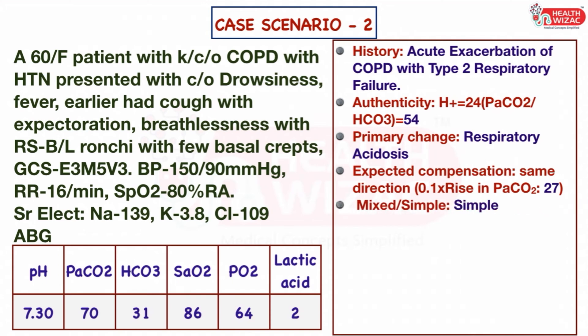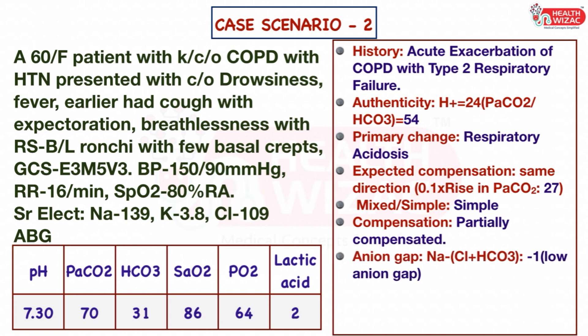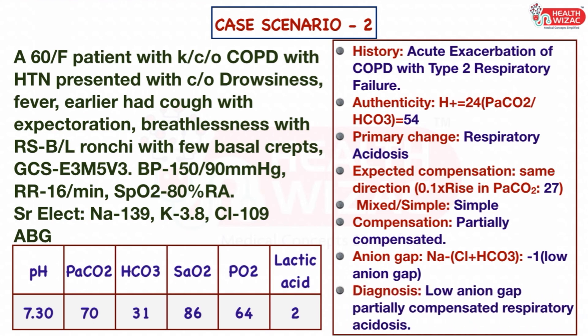Step 5 — the disorder is simple as the same direction rule is followed. Type of compensation is partially compensated as all three parameters — pH, PaCO2, and bicarbonate — are abnormal. Step 6 — calculated anion gap is minus 1, which is low. Final diagnosis: low anion gap, partially compensated respiratory acidosis.